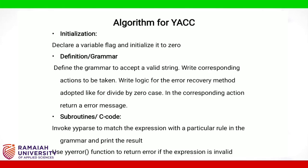Algorithm for Yacc — In initialization: declare a variable flag and initialize it to 0. In definition, i.e., grammar: define the grammar to accept a valid string, write corresponding actions to be taken, and write logic for the error recovery method — for example, the divide by zero case — and return an error message. In subroutines or C code: invoke yyparse to match the expression with a particular rule in the grammar and print the result.